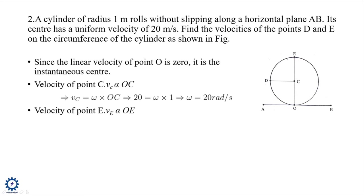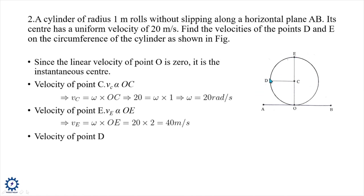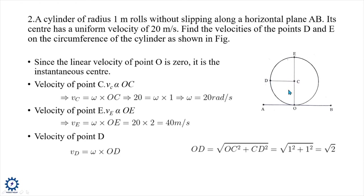Velocity at E: ve = omega × OE. Substituting values gives ve = 40 m/s. Velocity at D: vd = omega × OD. OD is determined from triangle OCD: OD = sqrt(OC² + CD²) = sqrt(2). Substituting gives vd = 28.28 m/s.